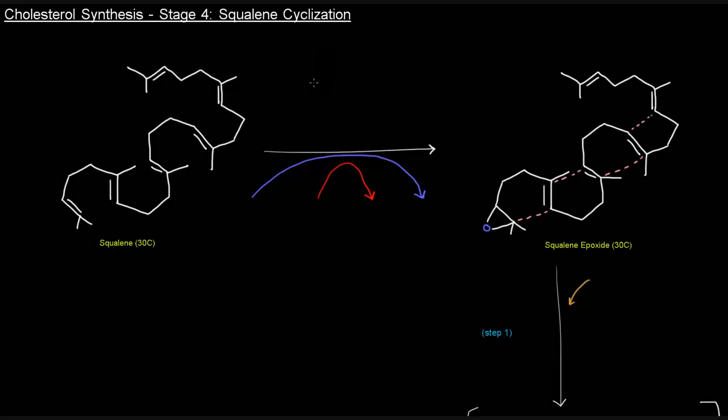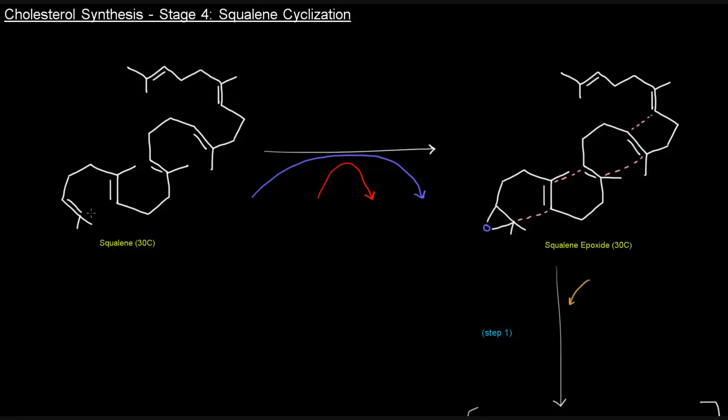So now that we've got squalene, stage 4 can happen, which is squalene cyclization. I've drawn squalene here, but it's oriented in a way that you can hopefully see how we're going to make the A, B, C, and D rings that make up the steroid nucleus.